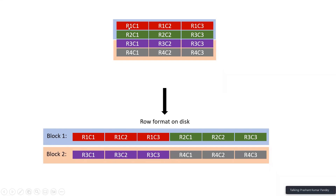That's what we call row format. Row format means your data is stored in the blocks as a row. The entire row is stored in the block. Depending upon the row size or length, your block might store one row, or it might store two rows, or maybe 10, 20, or 100 rows. All the columns of one row will be stored in the block, and if space is there, then the next row is stored. If space is not there, we move to the next block.